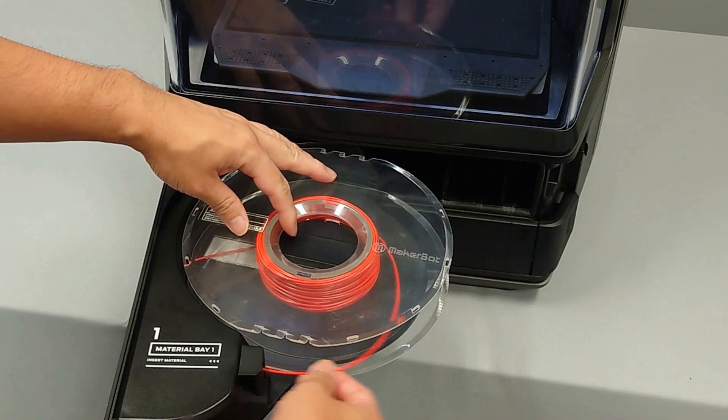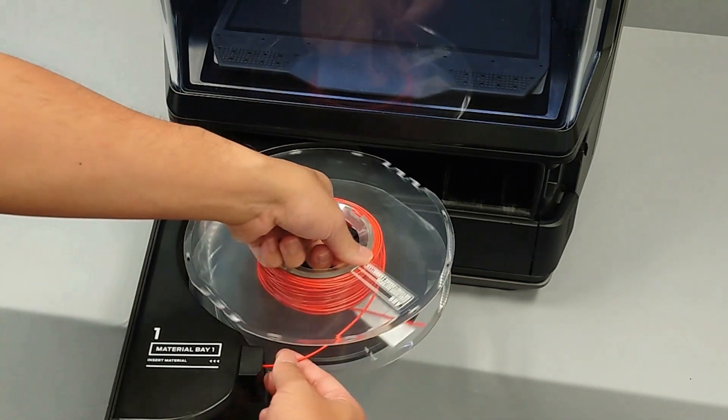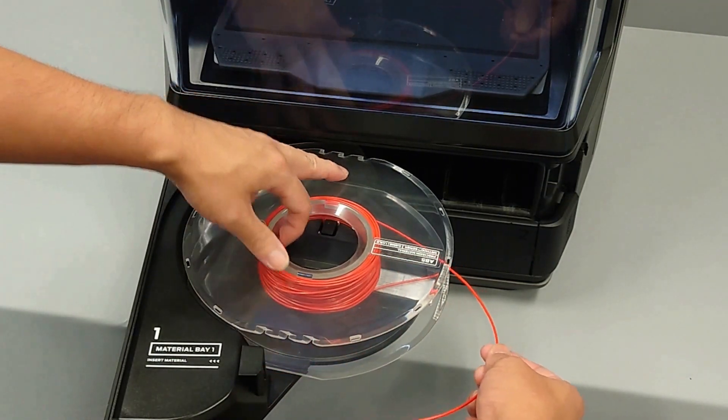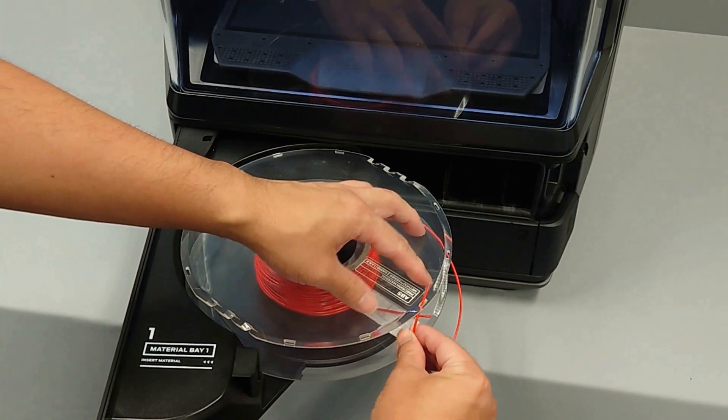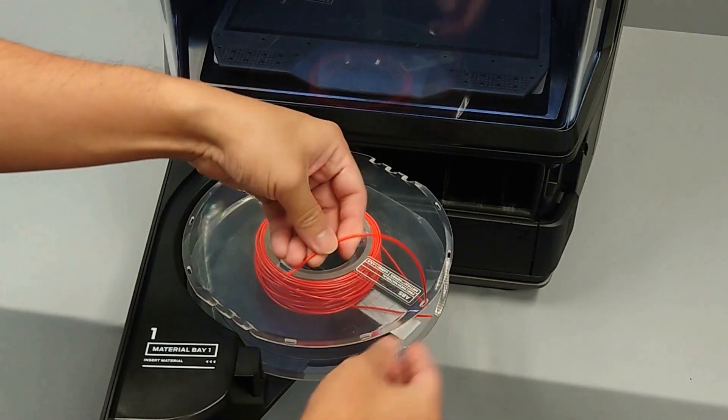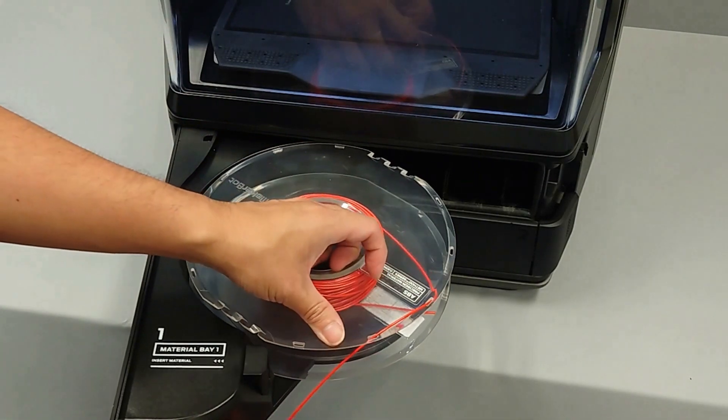Be sure to hold the material lead so that it does not release and tangle on the spool. Once the material lead is completely ejected from the loading port, thread it through one of the catch holes on the side of the spool.